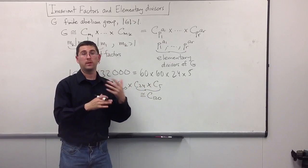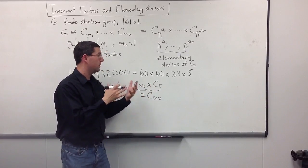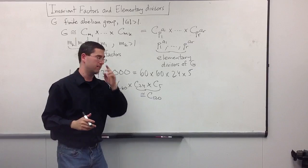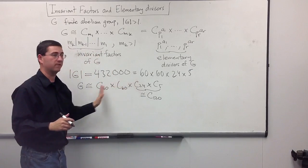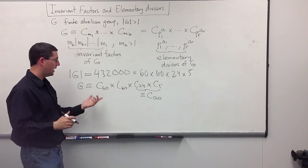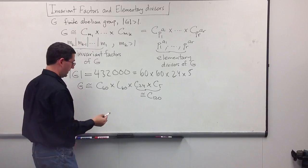But, what if we didn't notice that? Would there be a nice way of determining the invariant factors or the elementary divisors just by looking at the primes that are showing up? And, the answer is going to be yes. What we do is, we just start making a little list.